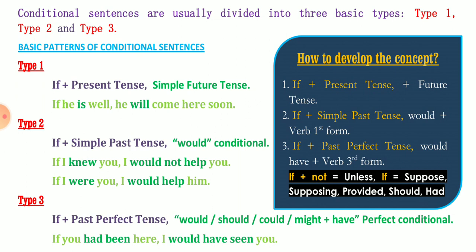Type 1: if plus present tense, then the second sentence will be in simple future tense. For example: 'If he is well' — 'is' is present tense — 'he will come here soon.' The main clause uses the future tense.